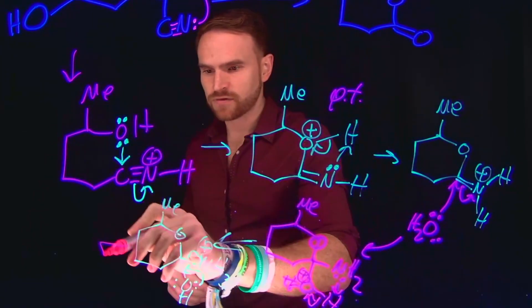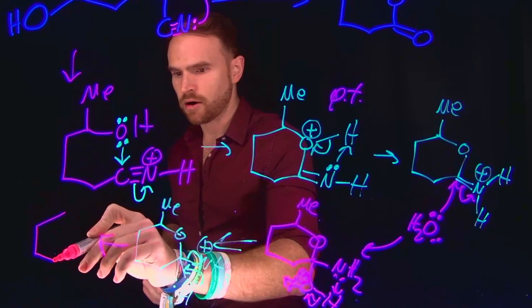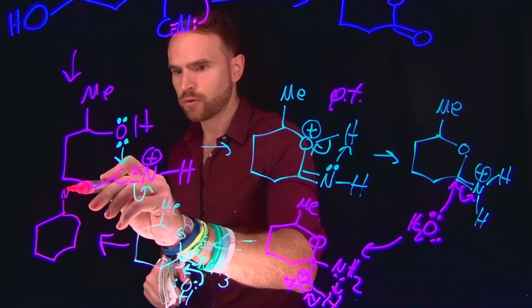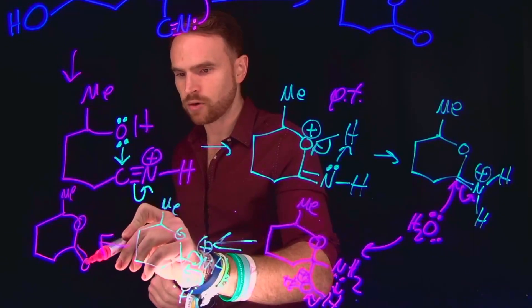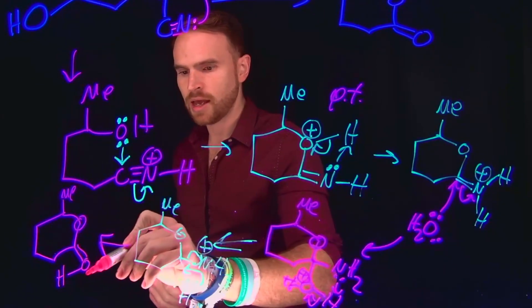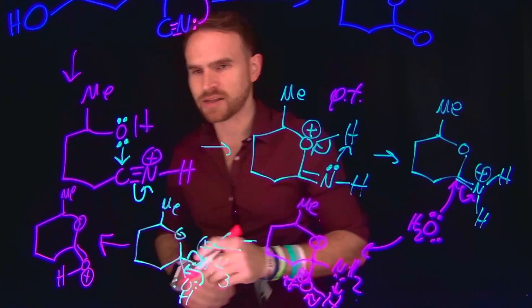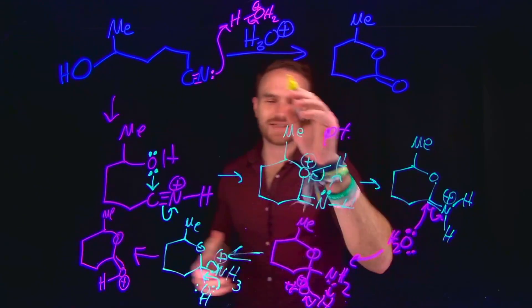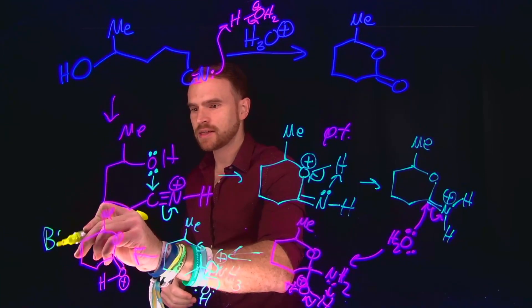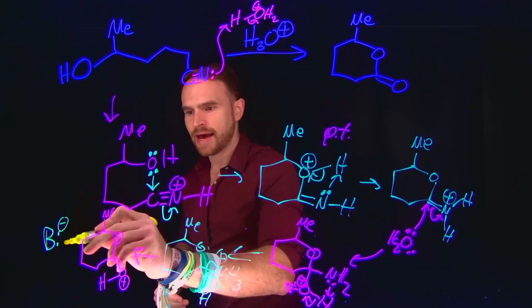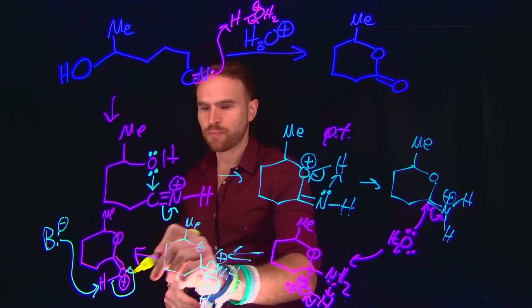So then the product of this transformation is going to be mostly our final product, where we have our methyl group here, our oxygen at this position, and here now we have formed this carbonyl carbon, except for this oxygen is protonated, making it positively charged. So then all that remains is either water or perhaps that amine can come in and act as a base to come and deprotonate that hydrogen, giving us our final product.